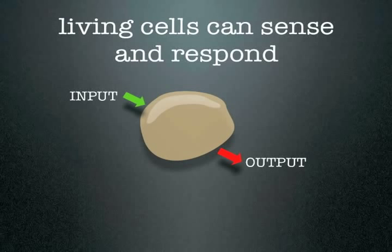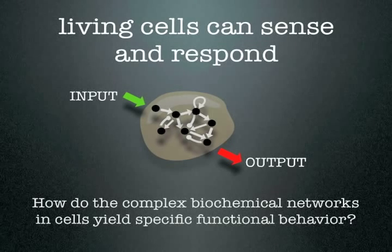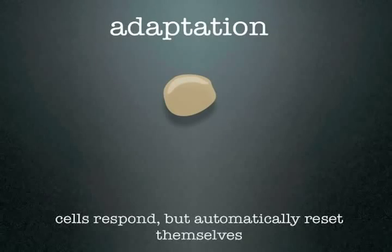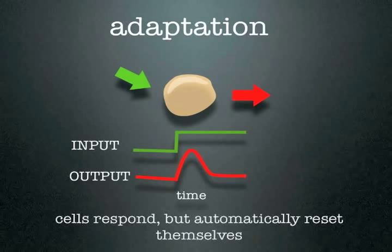Living cells can sense and respond to diverse inputs in sophisticated ways. A major question in systems biology is how the biochemical networks within cells yield these behaviors. An example of an important biological behavior is adaptation. In adaptation, cells respond to the presence of an input but then automatically reset themselves back to their basal state. Adaptation limits the time of activation and also allows the cells to respond to further increases in input. This is a fundamental property of many sensory systems.